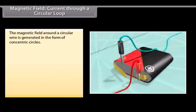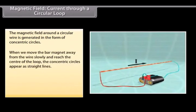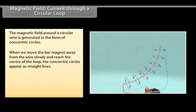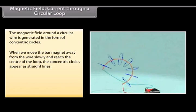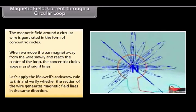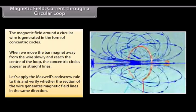Magnetic field current through a circular loop. Let us now look at what happens when the wire through which we passed the current is placed in a circular manner. The magnetic field around it is generated in the form of concentric circles. Try moving the bar magnet away from the wire slowly. By the time we reach the center of the loop, the concentric circles appear as straight lines. The entire magnetic field appears as a straight line. Now try applying Maxwell's Corkscrew rule to this and check whether every section of the wire is able to generate magnetic field lines in the same direction.